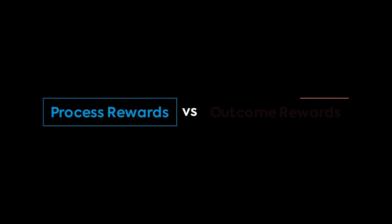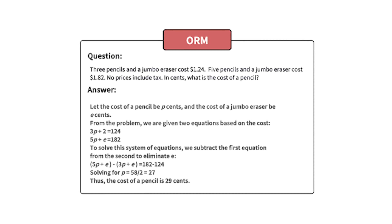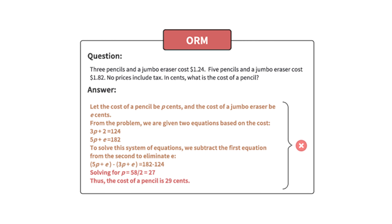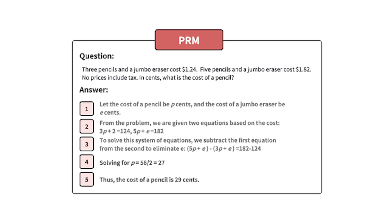A decision many model makers have to make is whether they're using process rewards or outcome rewards. With an outcome reward model, you might have multiple steps to get to the final solution. Let's say we give it a hard math problem requiring multiple steps, and it gets five of six steps right but the final step wrong — with an outcome reward model, the entire thing is wrong and it didn't learn anything about what it got right along the way. With a process reward model, it can get five of six right, then the final answer is wrong, but it can actually learn that those first five steps were correct and maybe try something different on step six.